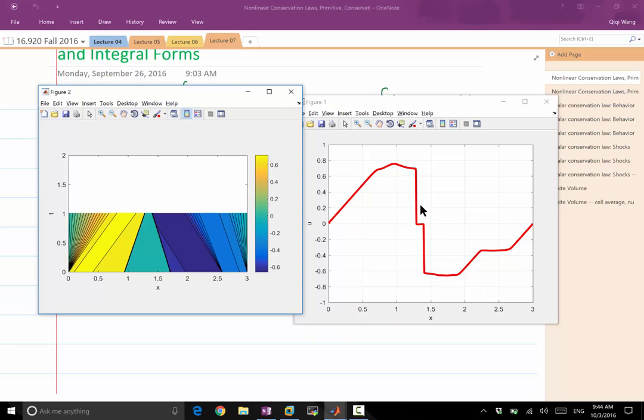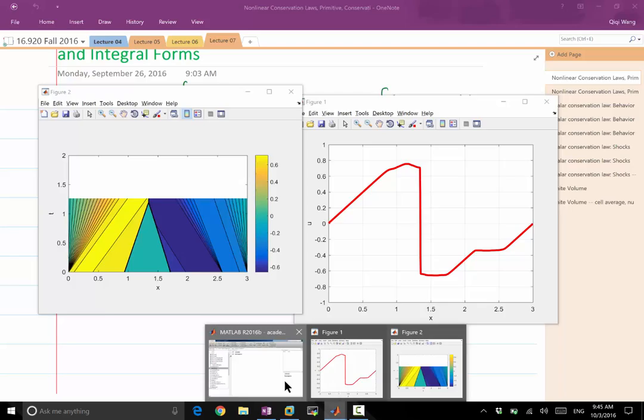So we see the wave actually distorting and becoming different from what you draw as the initial condition. In addition to that, we also see some of the original discontinuities expanding into a fan and some of the original discontinuities actually joining towards one stronger discontinuity. So this discontinuity is called shockwaves in nonlinear conservation laws that doesn't actually appear in the linear differential equations. All right. So let's stop this simulation for now.